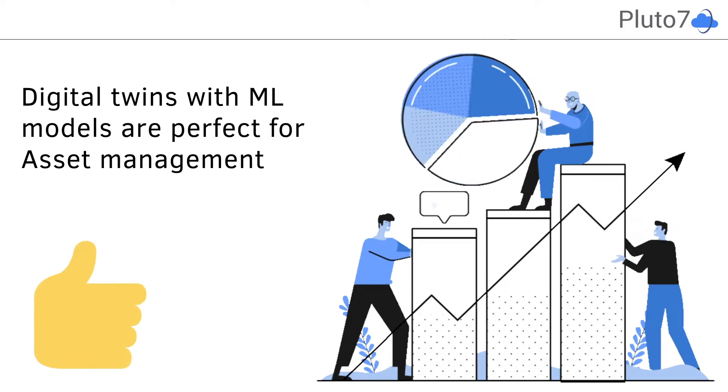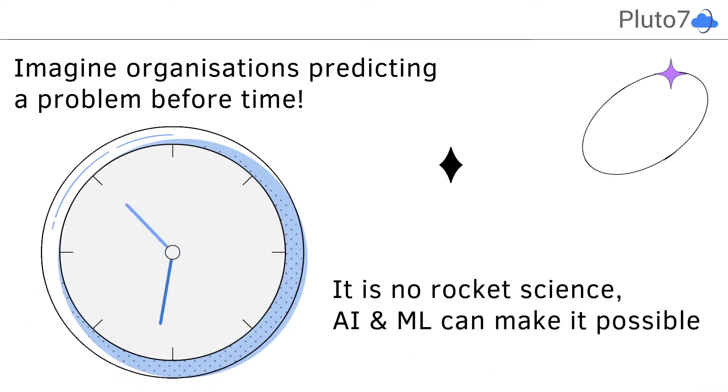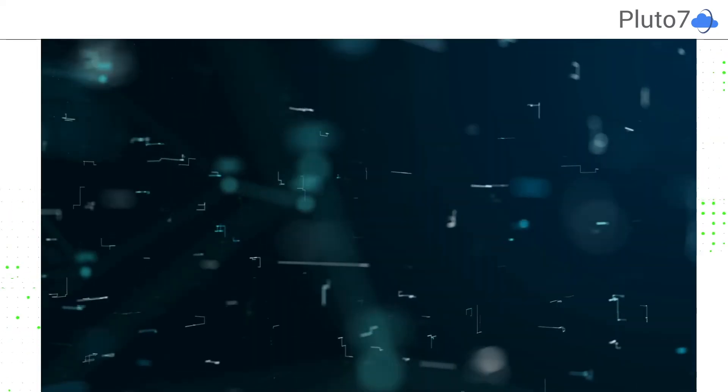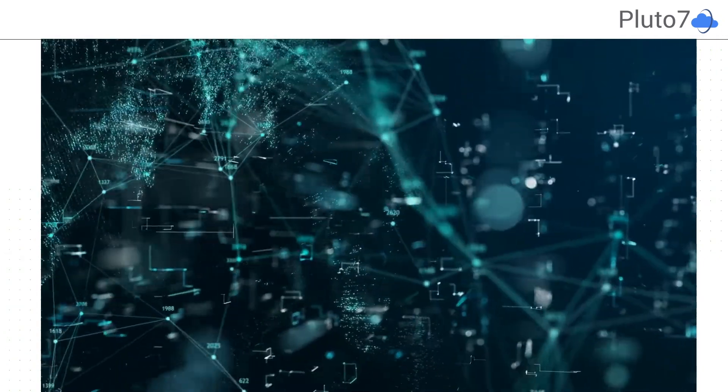Digital twins are excellent for optimizing asset performance and utilization. Imagine a manufacturing company being able to identify the root cause of a problem before it even occurs, or a utility company being able to anticipate an outage based on the weather.